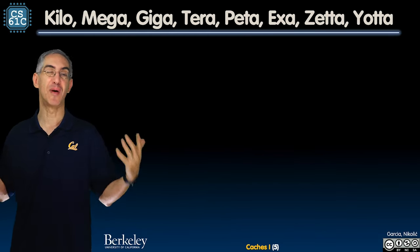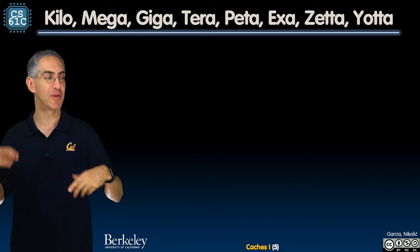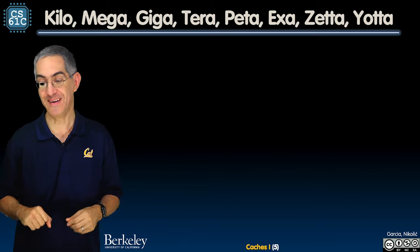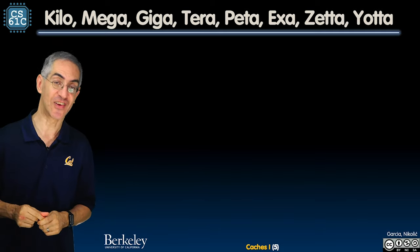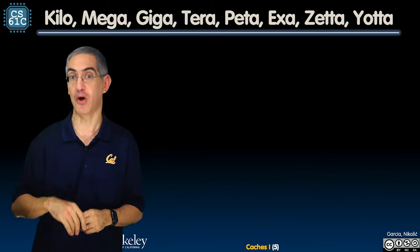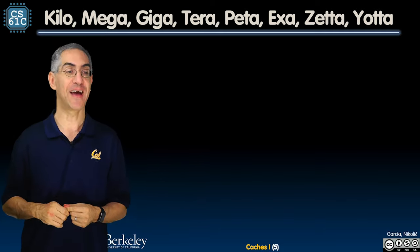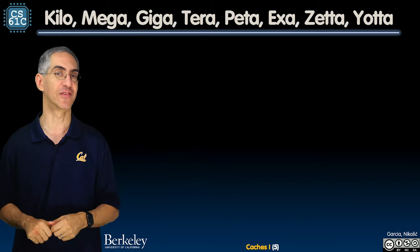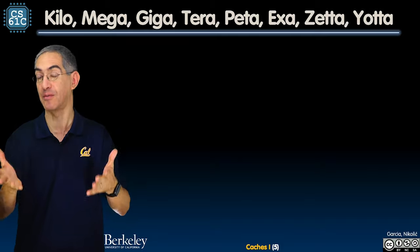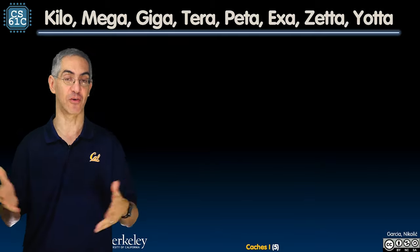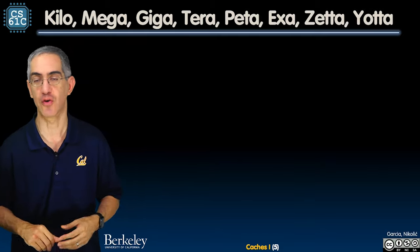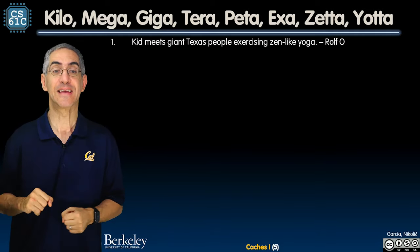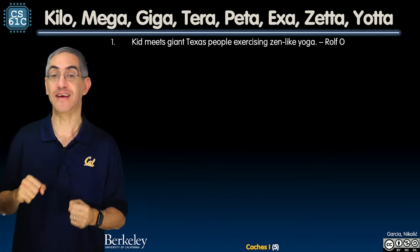You'll ask yourself: how do I memorize these? This is a challenge offered to CS61C students — come up with a mnemonic to remember the sequence K, M, G, T, P, E, Z, Y. Here's one: 'Kid Meets Giant Texas People Exercising Zen-like Yoga.' The first two letters of each word match the prefix.